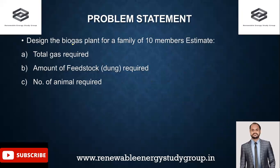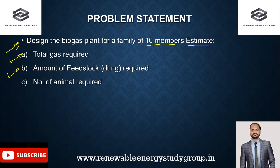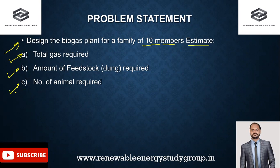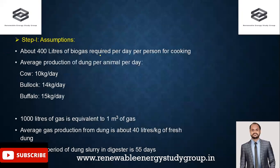We're going to design a biogas plant for a family of 10 members. We need to calculate the total gas required for the family, the amount of feedstock or cattle dung required to feed into the digester, and the number of animals required to supply enough cattle dung to run the biogas plant continuously. This is our problem statement for this lecture.